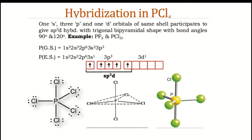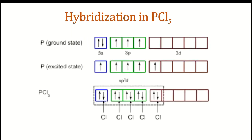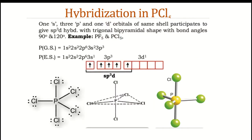Taking the example of PCl5 (phosphorus pentachloride): phosphorus in its ground state has atomic number 15, configuration [Ne] 3s² 3p³. In its excited state it has 5 half-filled orbitals, and PCl5 is hybridized giving rise to sp3d — 5 hybridized orbitals — which form bonds with the chlorine atoms, giving the PCl5 molecule with two non-equivalent sets of bonds.